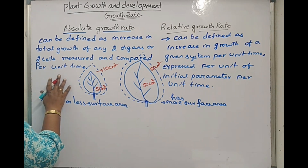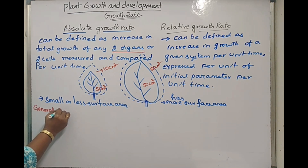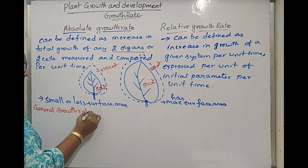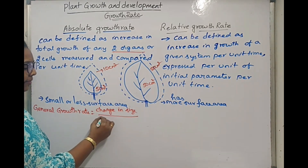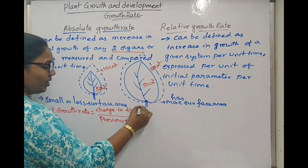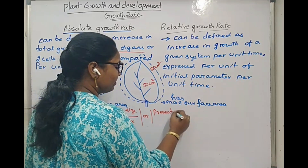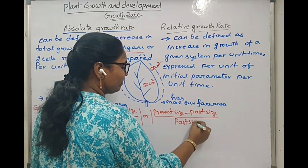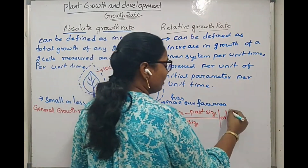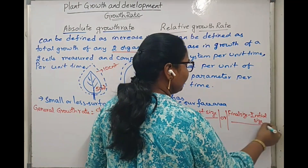First, we will calculate the absolute growth rate. In general, growth rate can be defined and calculated as change in size divided by previous size. This can also be written as present size minus past size divided by past size, or final size minus initial size divided by initial size.